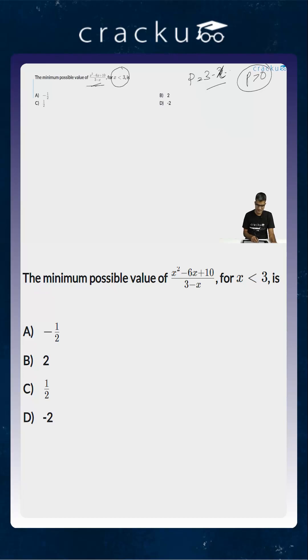Now the given expression is (x² - 6x + 10) divided by (3 - x), which is p. What is x² - 6x + 10? If you look at x² - 6x, you will notice that (x - 3)² equals x² - 6x + 9.